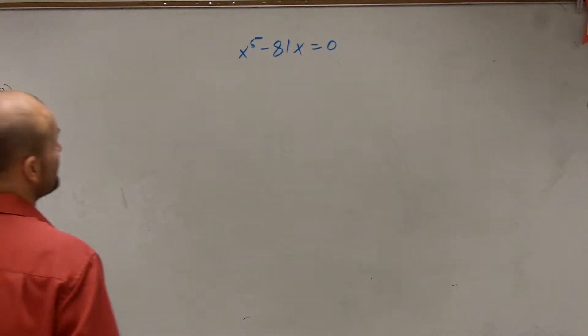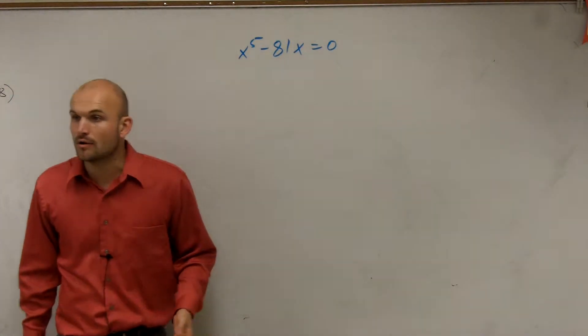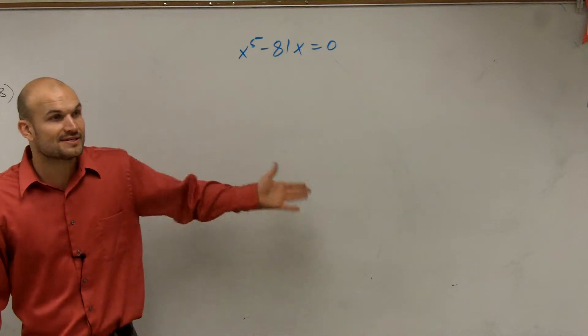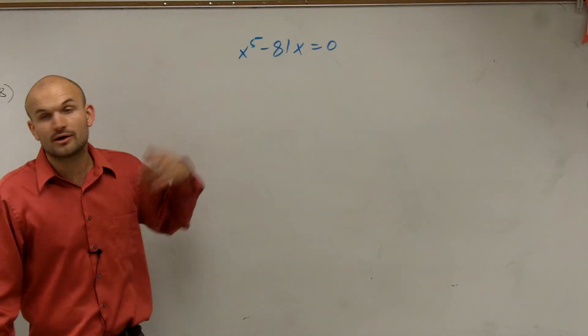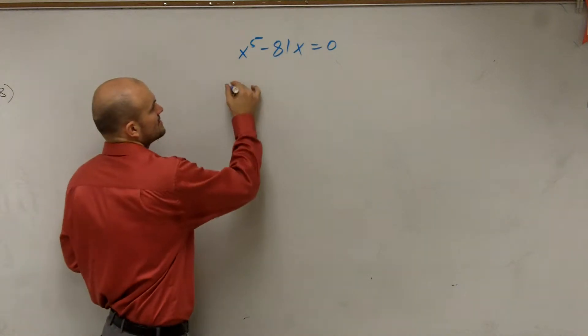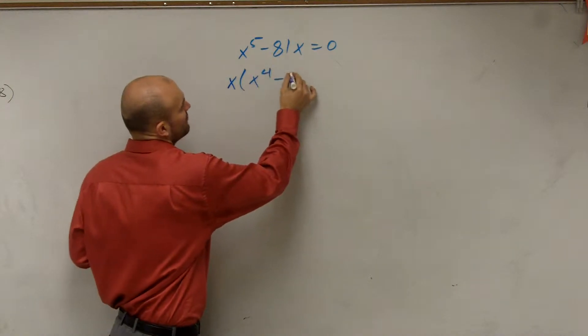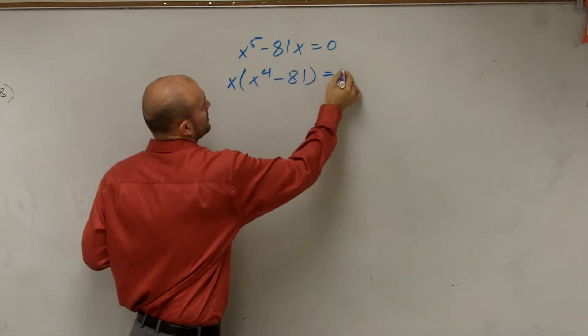If I have x to the fifth minus 81x equals 0, what I need to do is see if I can factor it. I know I can factor out the GCF, which would be x, leaving me with x to the fourth minus 81 equals 0.